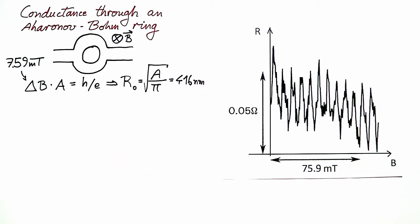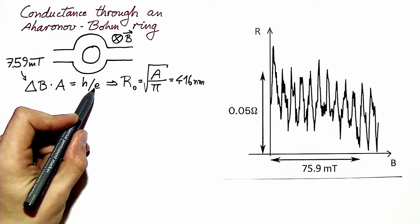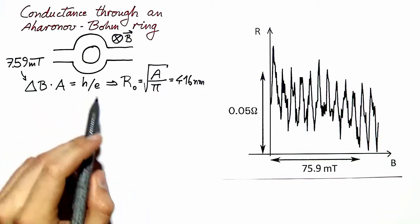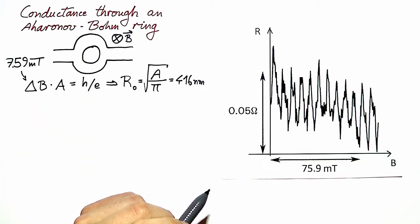This is what allows you to conclude that we see oscillations of period H over E and not H over 2E as in the Sharvin-Sharvin experiment.